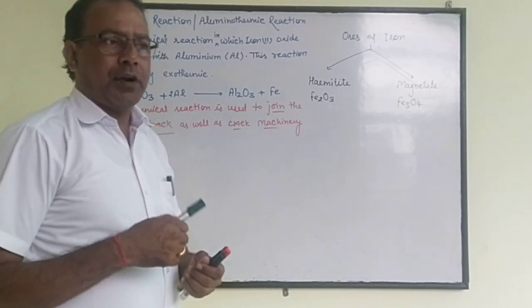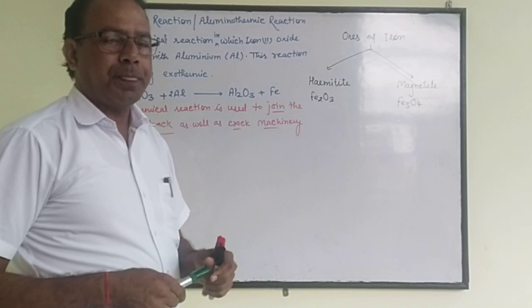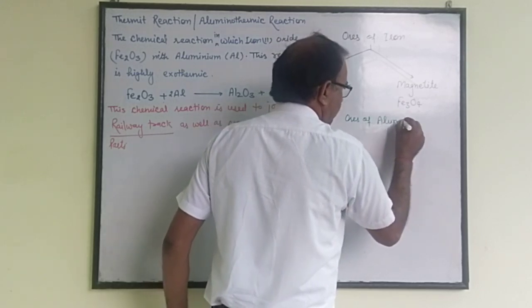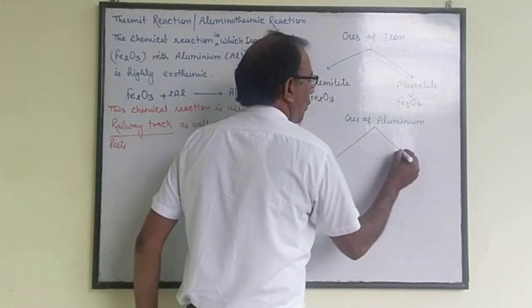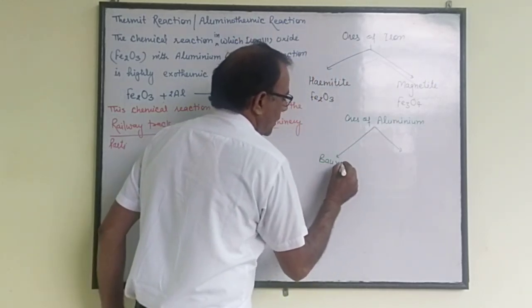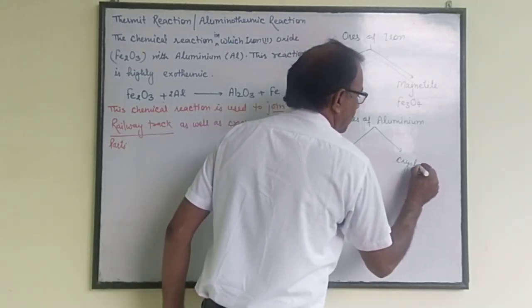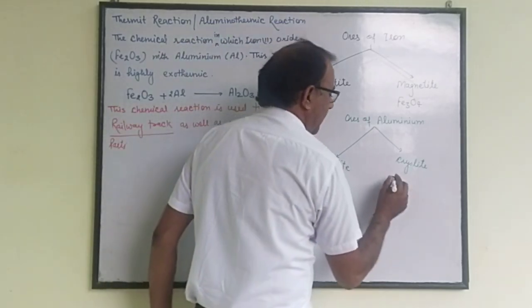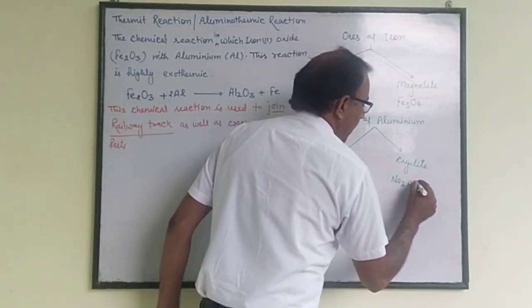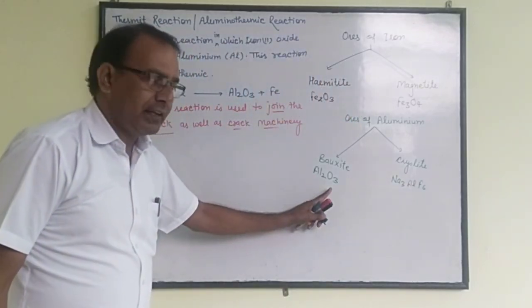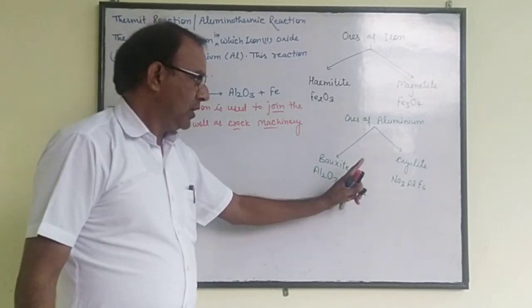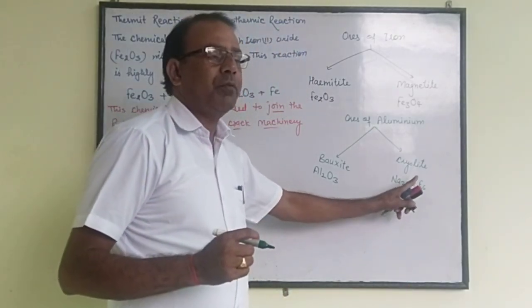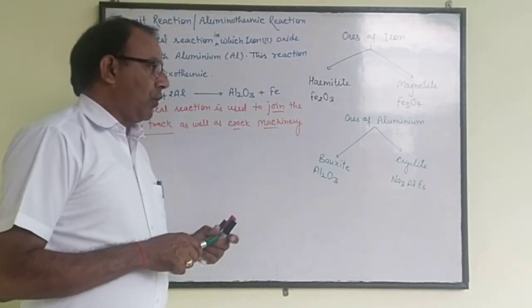Although aluminium has three ores — bauxite, cryolite, and corundum — we use only two: bauxite and cryolite. The chemical formula of bauxite is Al2O3 and the chemical formula of cryolite is Na3AlF6, whose chemical name is sodium aluminium fluoride. These are the two ores of aluminium.